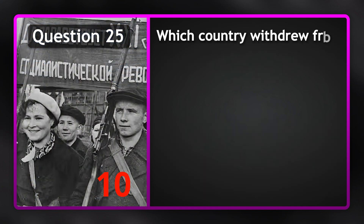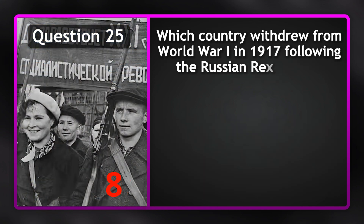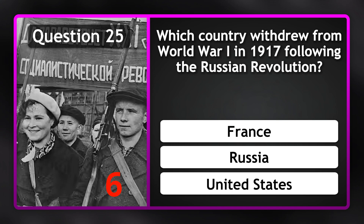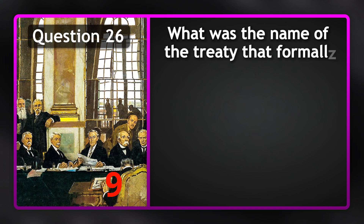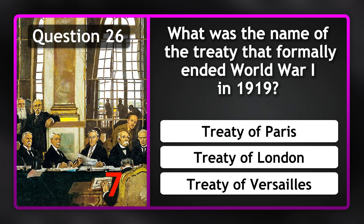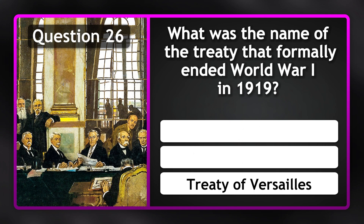Which country withdrew from World War I in 1917 following the Russian Revolution? Russia. What was the name of the treaty that formally ended WW1 in 1919? Treaty of Versailles.